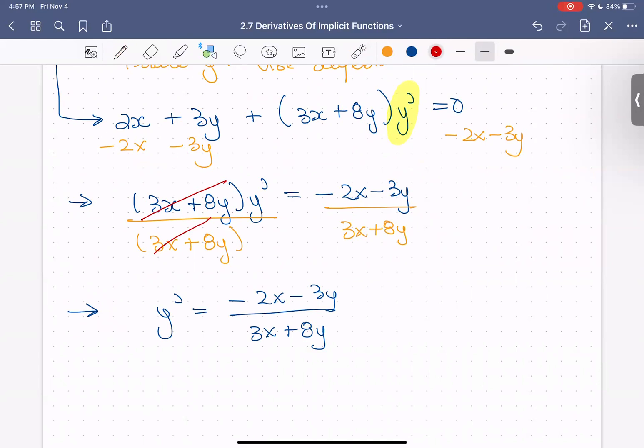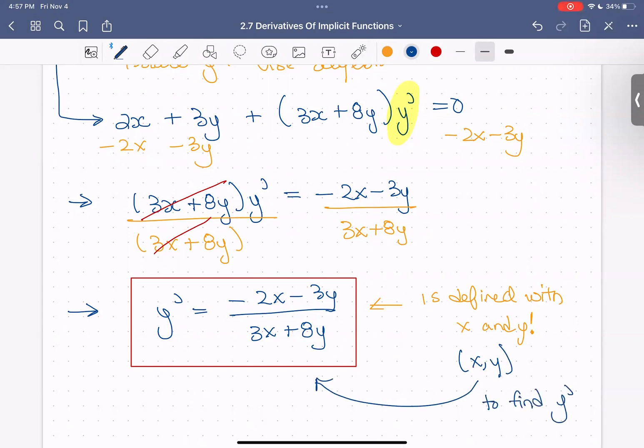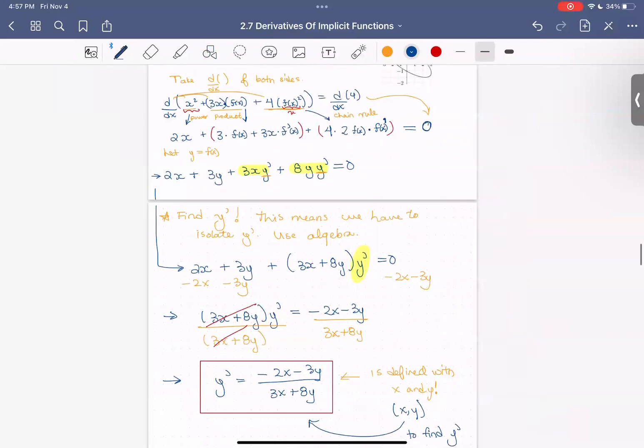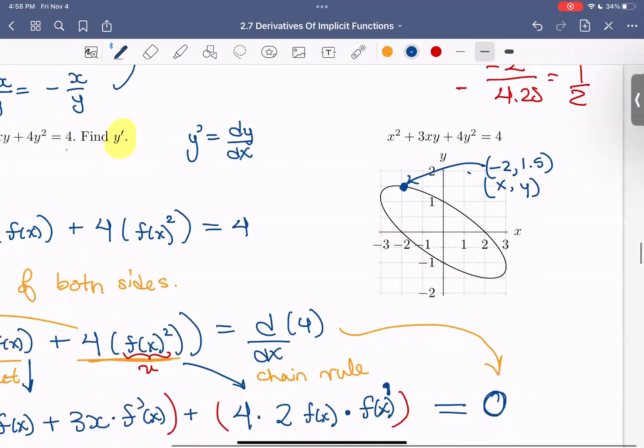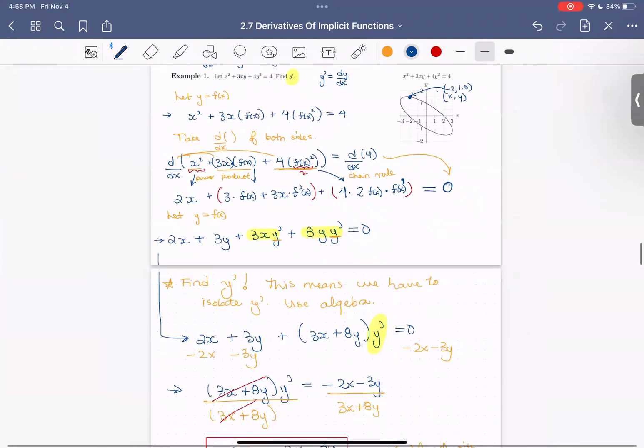So that is our final answer for y prime. And notice again, just as in the preliminary example, y prime is defined with both x and y. So that means it takes a coordinate, an xy coordinate, in order to find a specific y prime value. So going back to our graph here, there are xy points on our graph. So if we want to know the derivative at this point, this is a point that looks like it's around negative 2, positive 1.5. We use both the x and the y to find the derivative at that point. And how do we use it? We plug it into this formula.